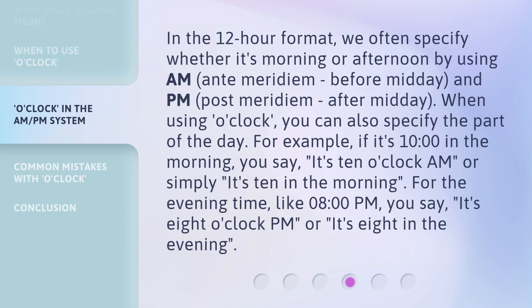In the 12-hour format, we often specify whether it's morning or afternoon by using a.m. (ante meridiem) before midday, and p.m. (post meridiem) after midday. When using o'clock, you can also specify the part of the day. For example, if it's 10 o'clock in the morning, you say: it's 10 o'clock a.m., or simply, it's 10 in the morning. For the evening time, like 8 p.m., you say: it's 8 o'clock p.m., or it's 8 in the evening.